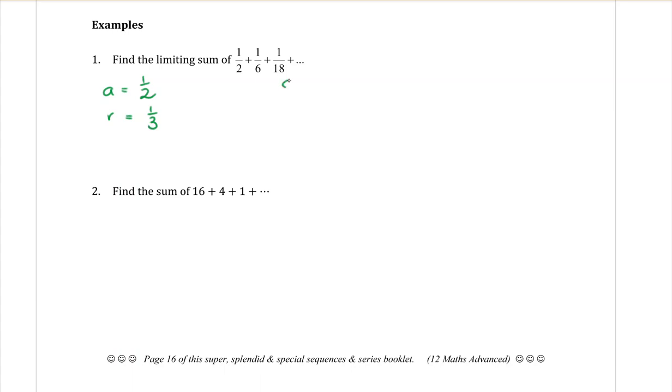So the limiting sum formula, sum to infinity of A over one minus R. And we sub in. A is a half, one minus R, which is one-third. And just type in your calculator. So that equals three over four.